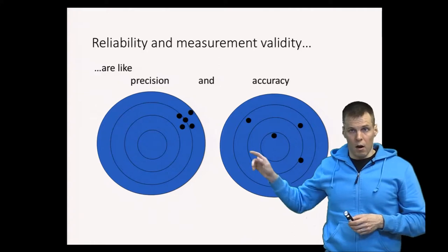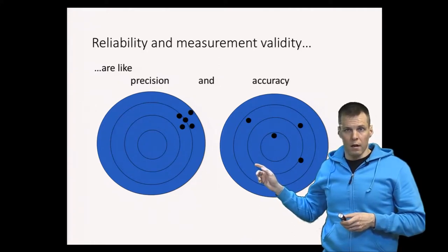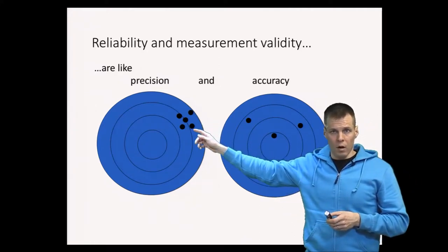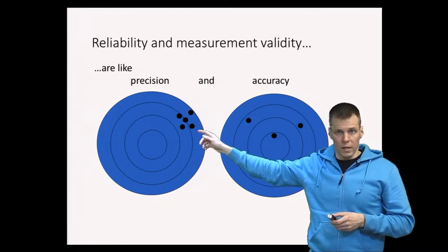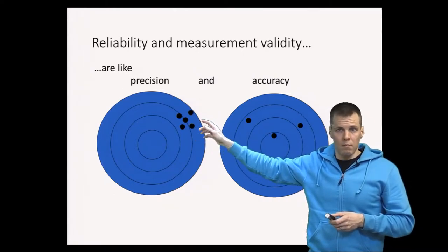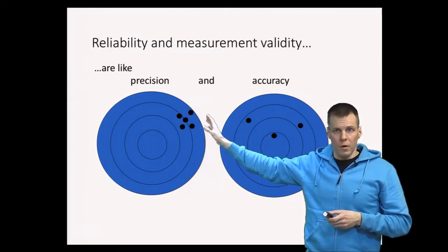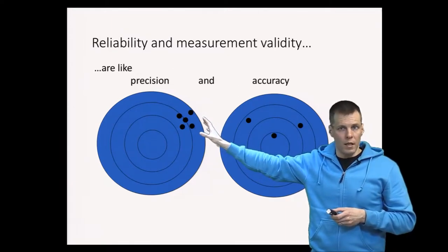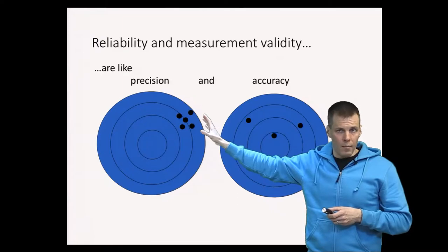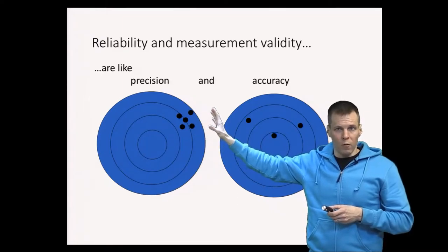So this is a target that somebody is shooting and here we have only a small amount of dispersion in the hits but the sights are off. So this shooter is very precise but he's not hitting the target. This is reliable but not valid measurement.